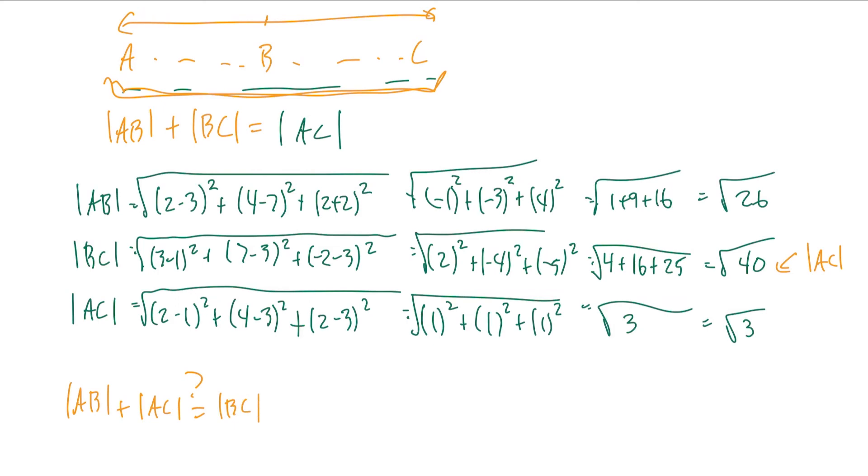We got square root of 26 plus square root of 3, and that does not equal the square root of 40. So these three points don't lie in a straight line.